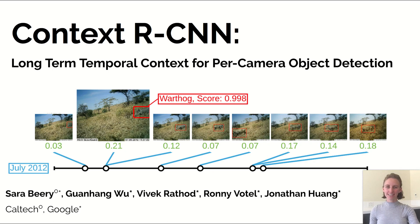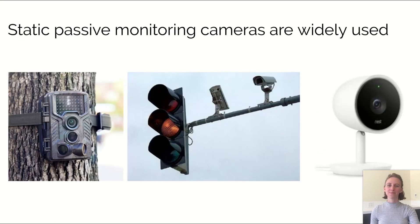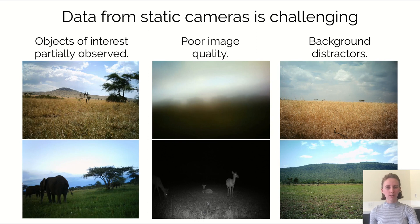We present Context R-CNN, long-term temporal context for per-camera object detection. Static passive monitoring cameras are widely used, but data from static cameras is challenging. Objects of interest are partially observed, image quality can be poor, and the background is frequently confused as foreground.